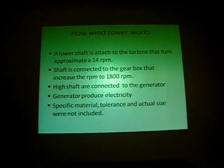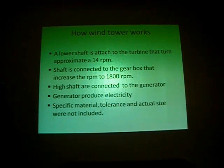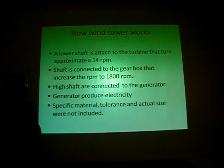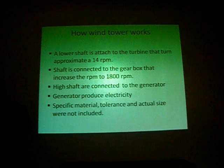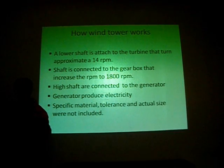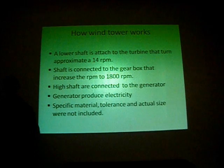Now I want to explain a little bit how wind towers work. First of all, there is a lower shaft that is attached to the turbine that is approximately at 14 RPM. This shaft is connected to the gearbox that increases the RPM to 1800 RPM. The high shaft is connected to the generator that produces electricity. The specific material tolerance and accuracy were not included during the process of the design.